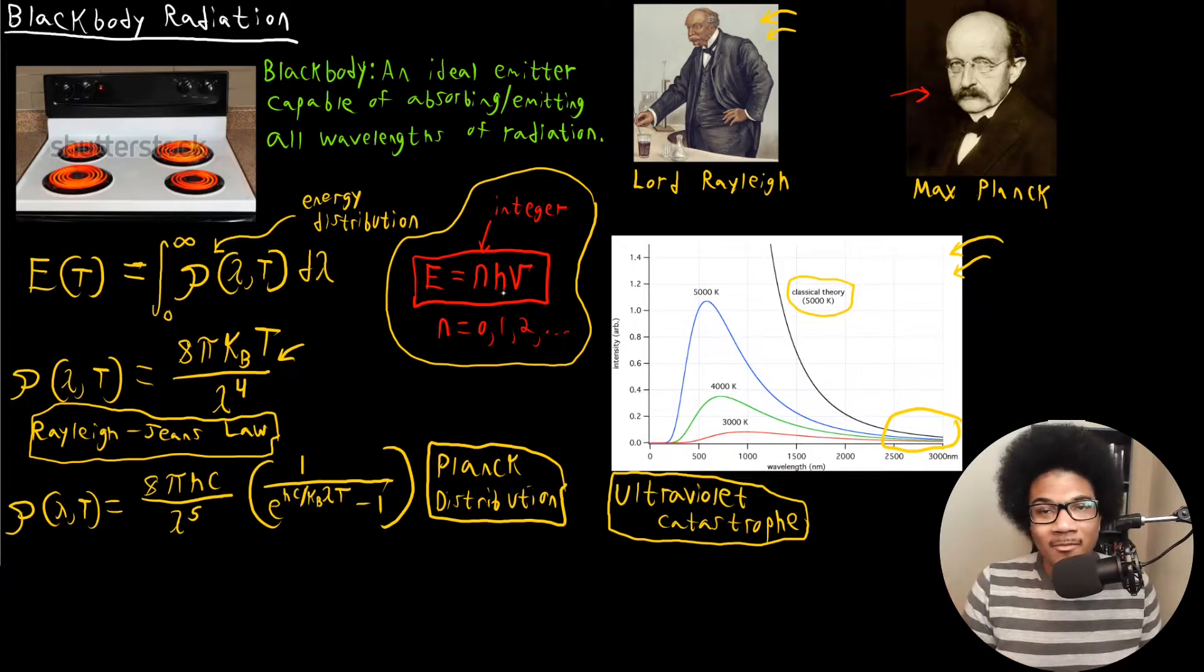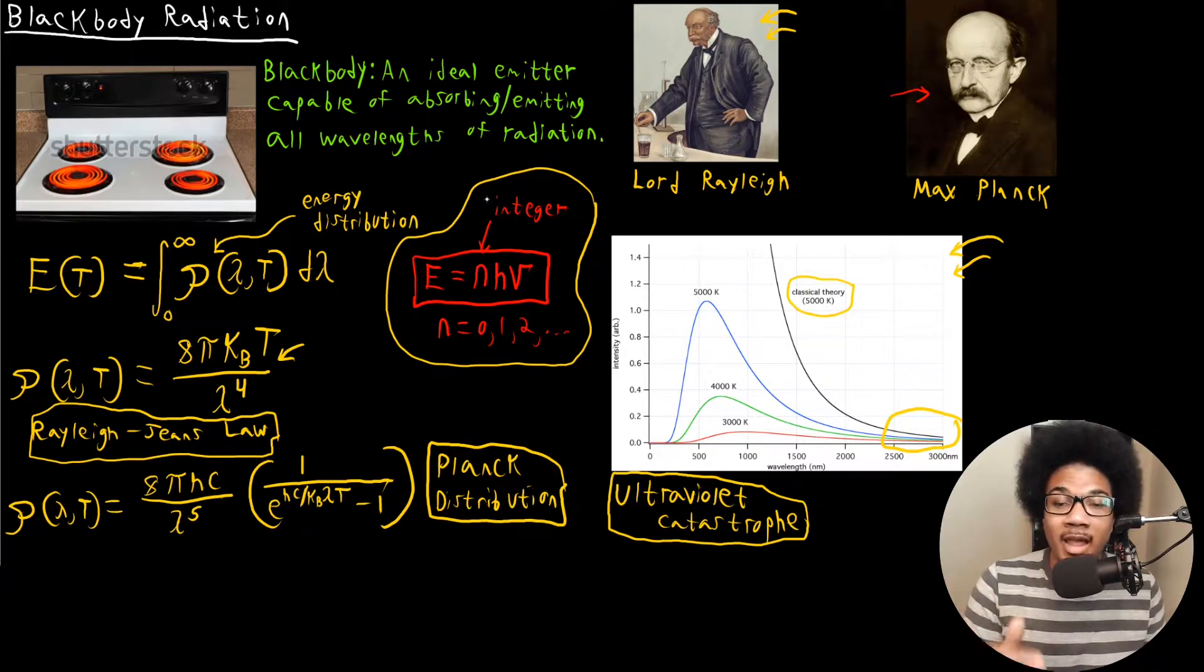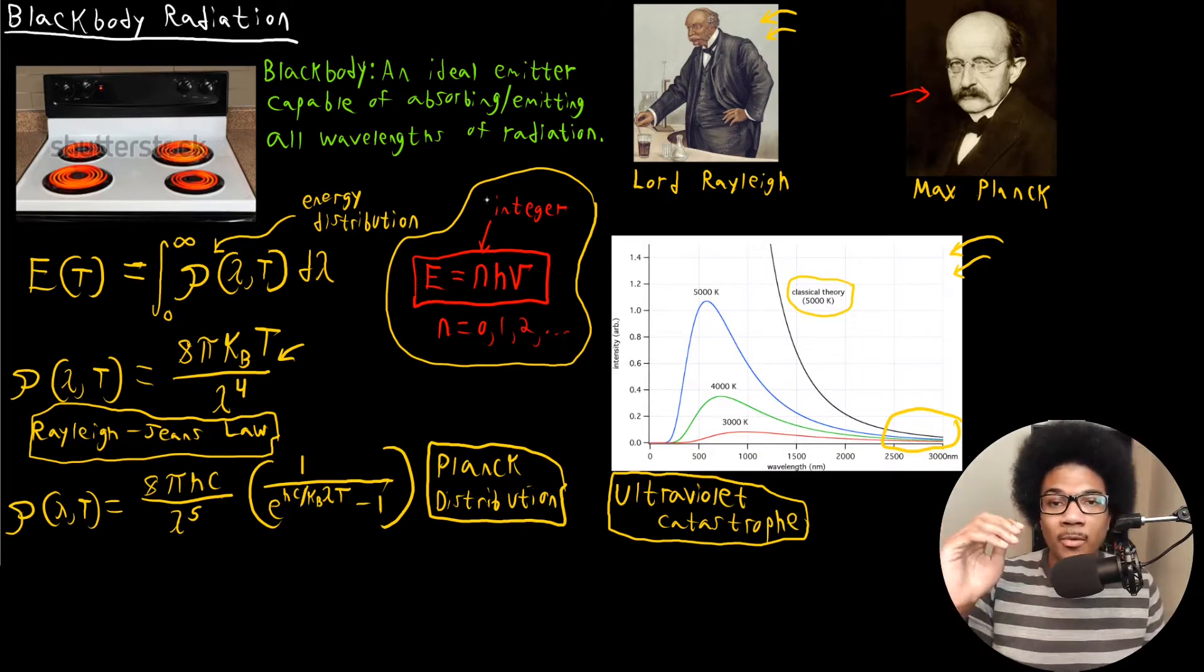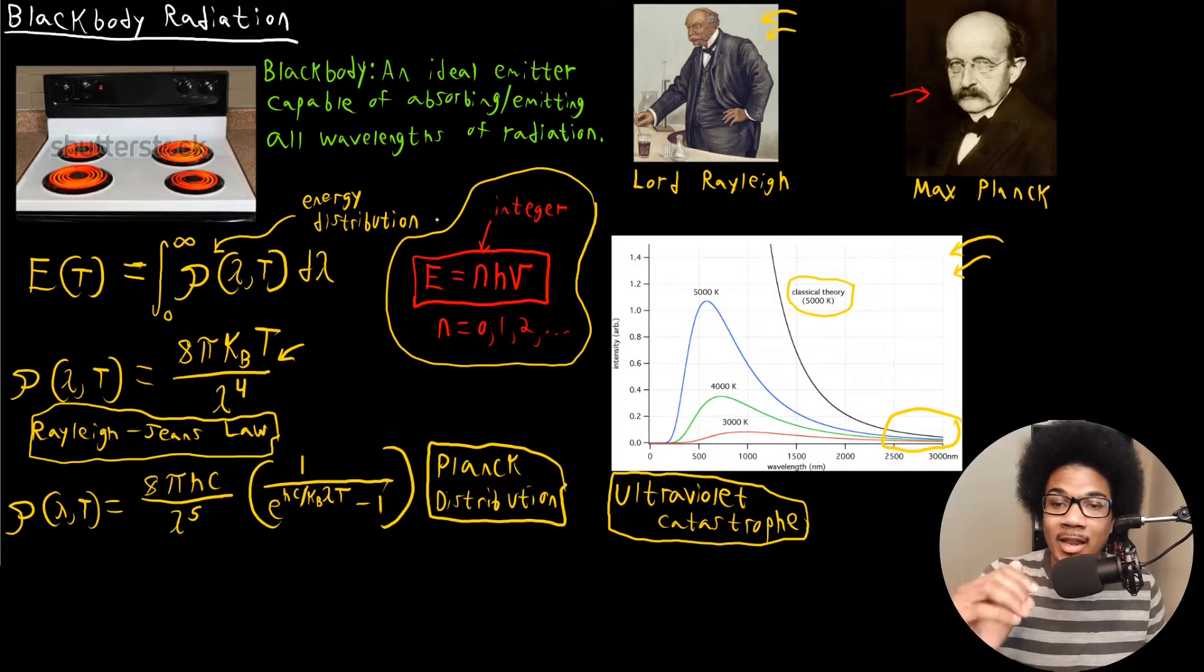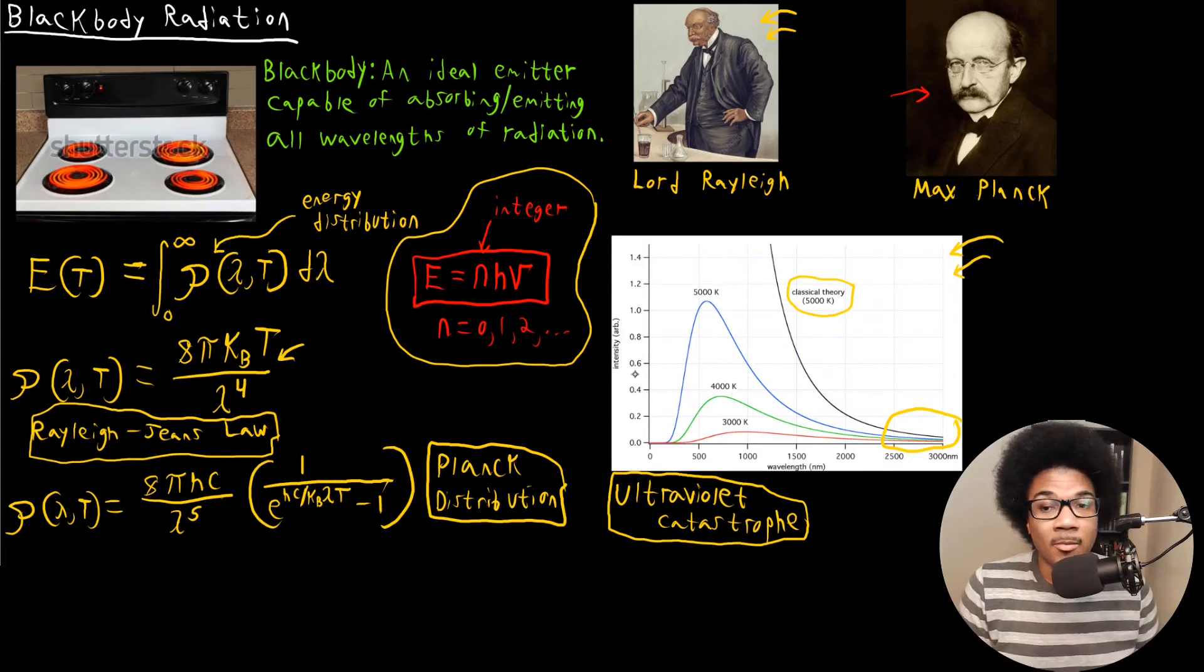Kind of thinking back to that video I did reviewing electromagnetic radiation, all of these failures of classical mechanics boil down to one of those incorrect assumptions from classical mechanics. This one really hinges on that energy is quantized. Accounting for the fact that energy is quantized, you get a correct Planck's distribution, which better models experiment than the Rayleigh-Jeans law.